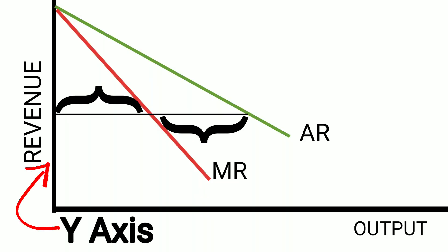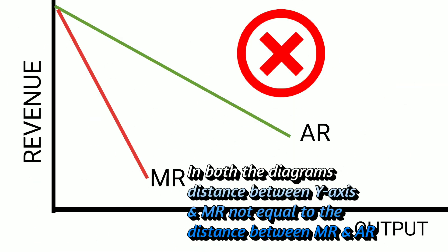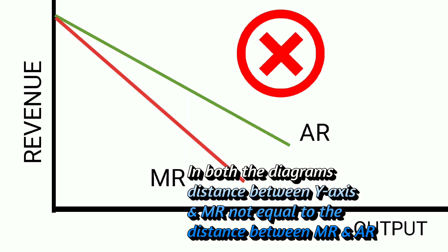Most students do not do that. What they do is rely only on the fact that AR and MR are both downward sloping, and just draw the diagram anyhow — but that is not correct, that is wrong. When you draw the AR and MR diagram, remember your MR curve should lie halfway between the AR and the Y-axis. If you have drawn a diagram where that is not the case, as shown on the screen, then it is wrong. Similarly, the next diagram shown is also wrong.